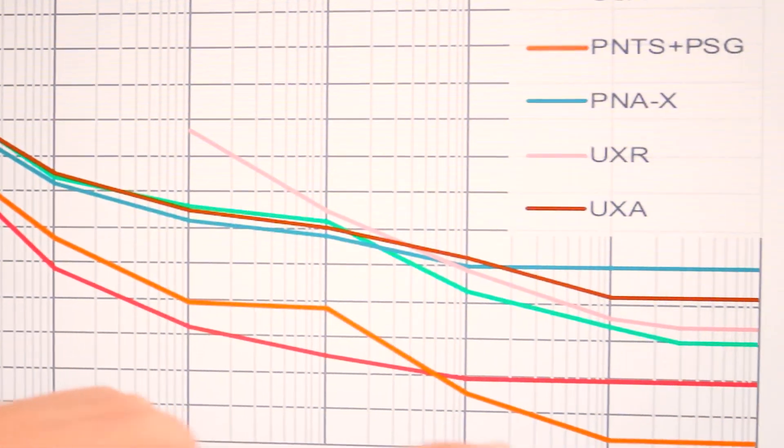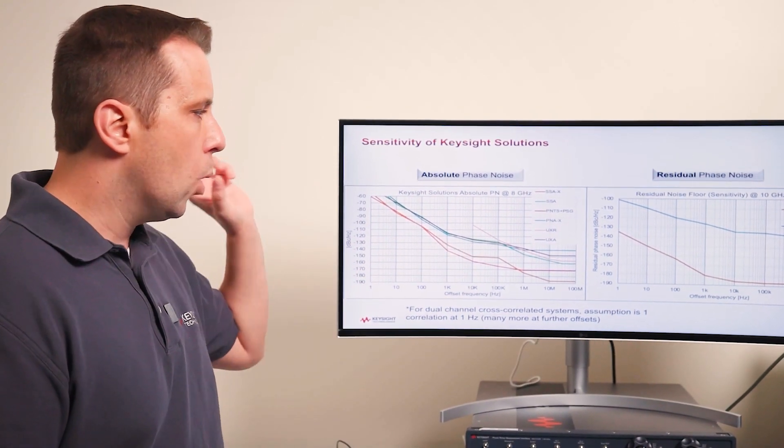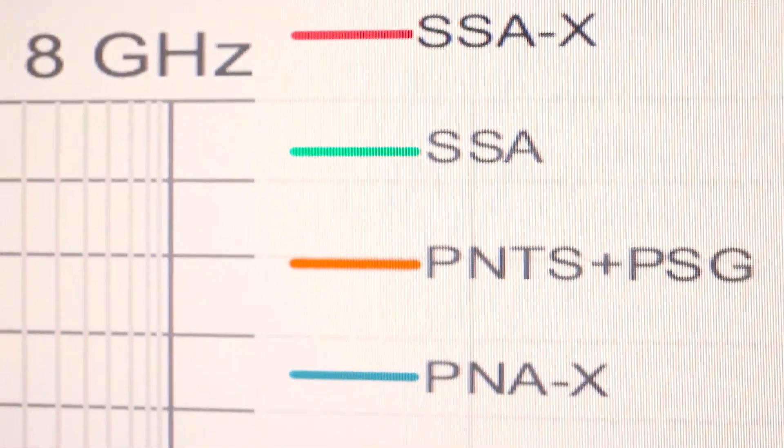There may be many millions done at higher offsets depending on if there are parallel processing happening. The only cross-correlating systems in this chart are the SSAX, the SSA, and the PNTS.